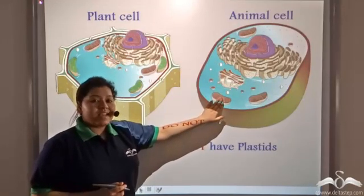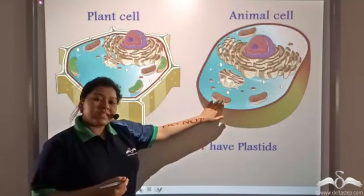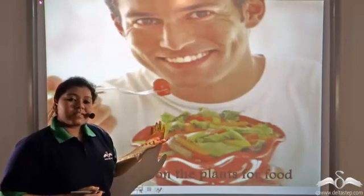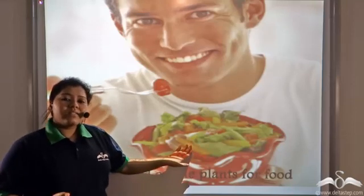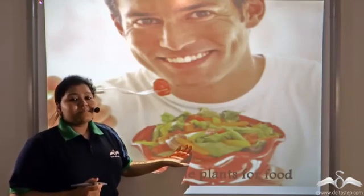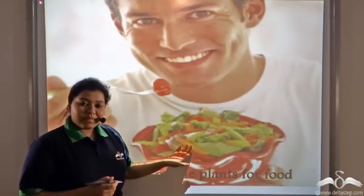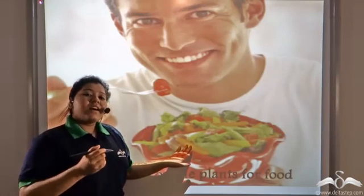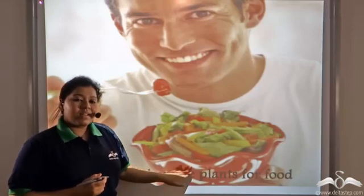This means that animal cells do not have chloroplasts in them, so they cannot manufacture food by the process of photosynthesis. That is why we are dependent on plants for food — all animals and all human beings depend on plants for food. You might say that carnivorous animals are not dependent on plants, as they eat other small herbivorous animals. However, even carnivorous animals are indirectly dependent on plants for food, because those herbivorous animals are themselves dependent on plants. So even humans who eat only flesh and meat are also indirectly dependent on plants for food.